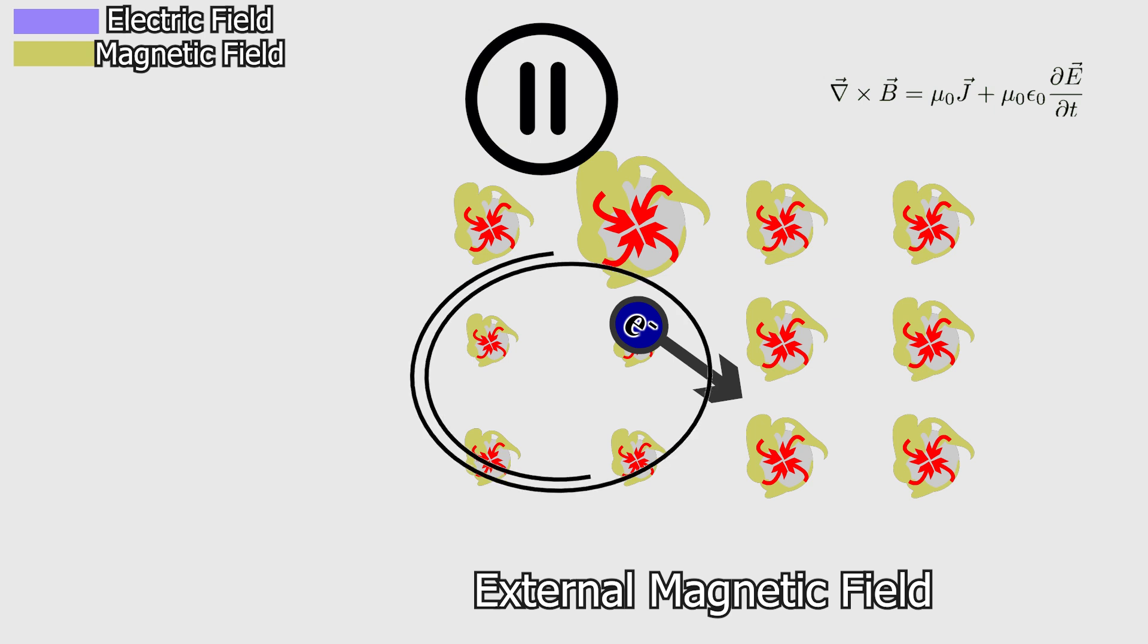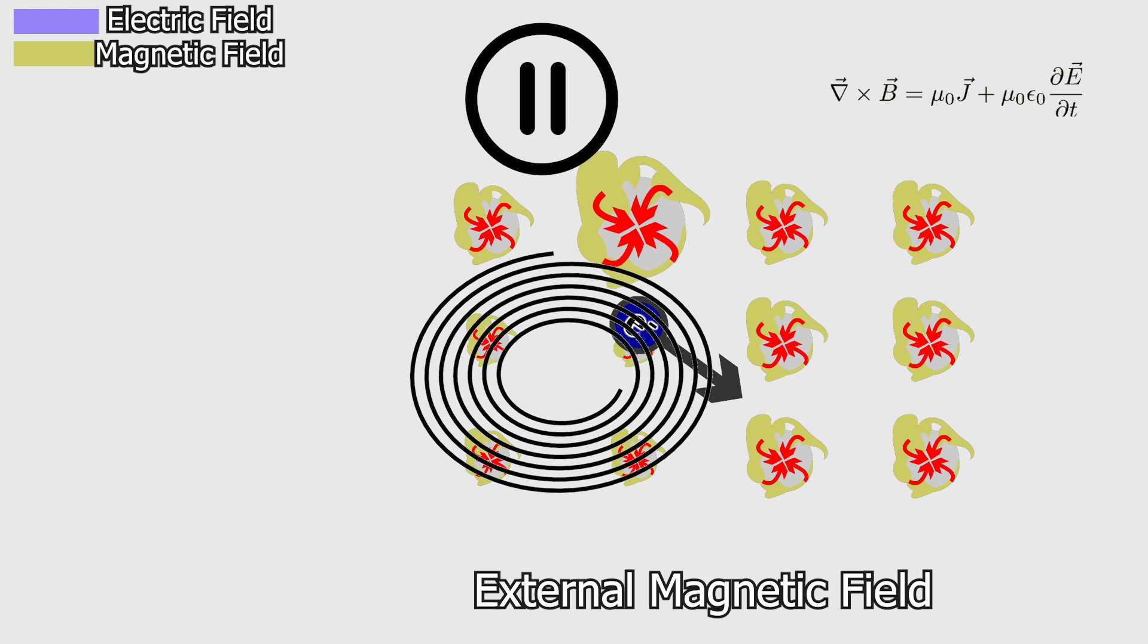A fundamental principle of nature is that systems tend to move toward lower energy states. This tendency is why we often call such points attractors, a concept we explored in previous videos.